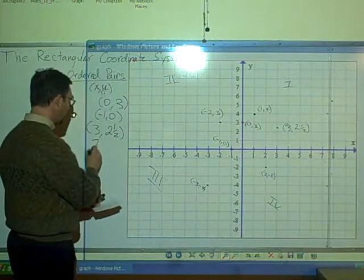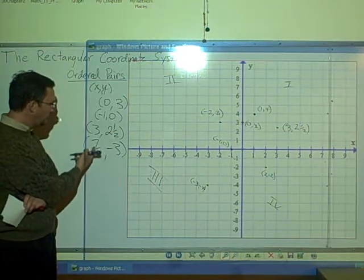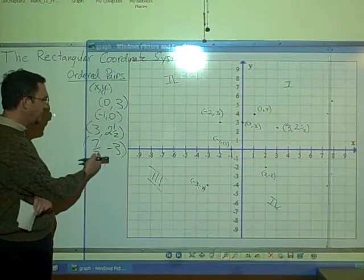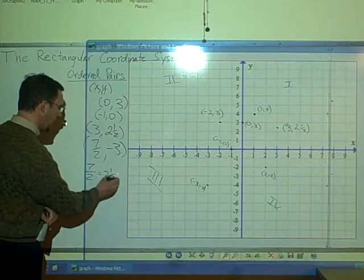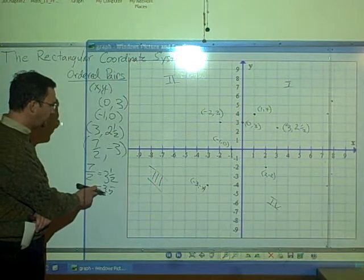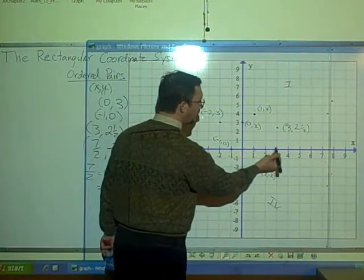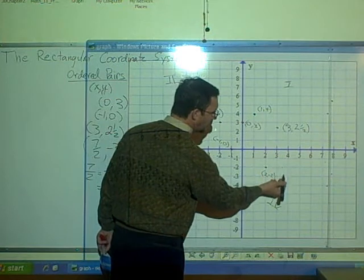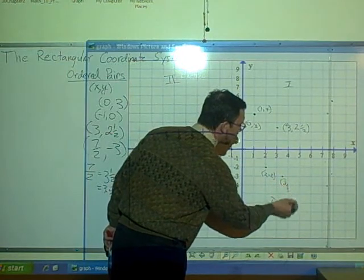Finally, let's look at the example 7/2, negative 3. 7 over 2 is a number which I could rewrite as a mixed number or as a decimal. 2 goes into 7 three times with ½ left over. So 7 over 2 is equal to 3½, or we could think of it as 3.5. So that's my x-coordinate. I go over to 3.5. Then I'll go down 3 on the y-direction. So I go 1, 2, 3. 3½, or 3.5, takes me here. Then I go down 3, 1, 2, 3, and that puts me here, the point 3½, negative 3.